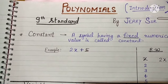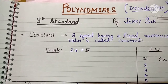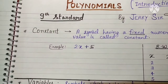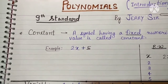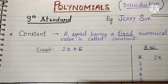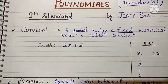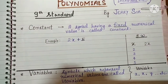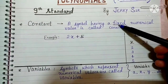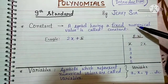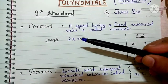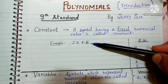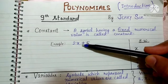These are the basic terms which you need to know before going to solve the exercise of this chapter. First is constant. A symbol having a fixed numerical value is called a constant. Focus on this word 'fixed.' As an example, consider 2x plus 5. This 5 is the fixed value here, and 2x can be changed.